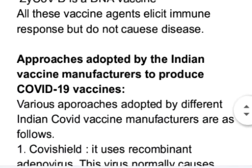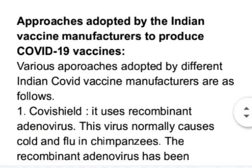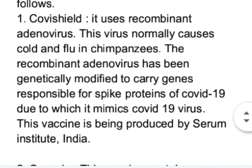The various approaches adopted by different Indian COVID vaccine manufacturers are as follows. First is Covishield — this vaccine uses a recombinant adenovirus that normally causes cold and flu in chimpanzees. The recombinant adenovirus has been genetically modified to carry genes responsible for spike proteins of COVID-19, due to which it mimics the COVID-19 virus. This vaccine is being produced by the Serum Institute of India.